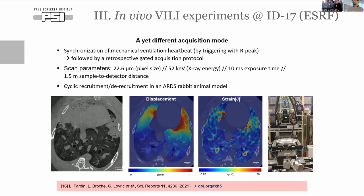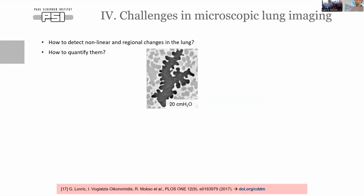The rabbit model was a bile model with a somewhat different setup. The scan parameters were lower resolution — 22 micrometer pixel size — but thanks to the higher flux available at synchrotrons we could do this in vivo very efficiently.